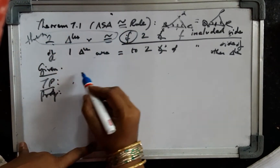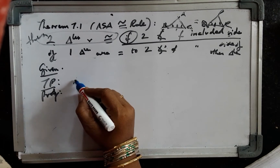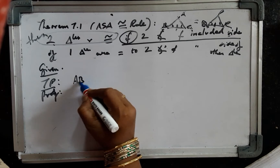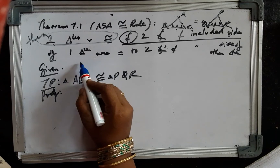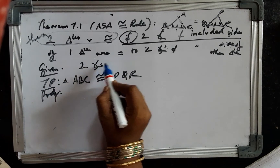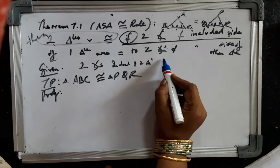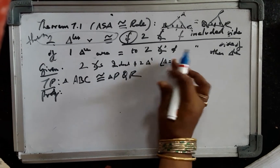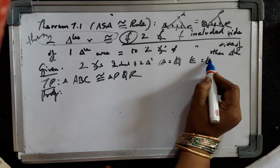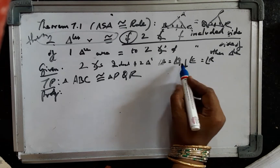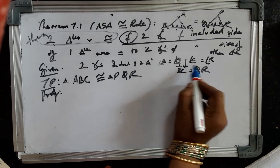Then the two triangles are congruent — that is the 'prove' component. So, triangle ABC congruent to triangle PQR needs to be proved, and the given component is: angle B equals angle Q, angle C equals angle R, and the included side BC equals QR.